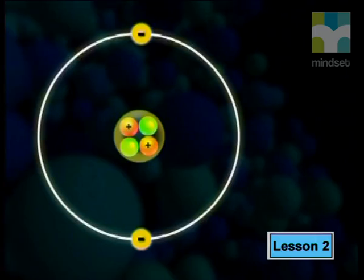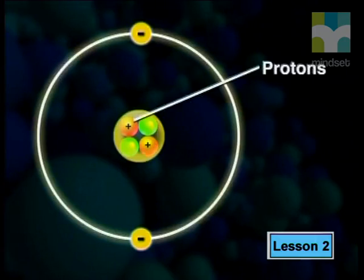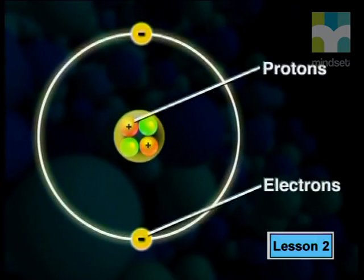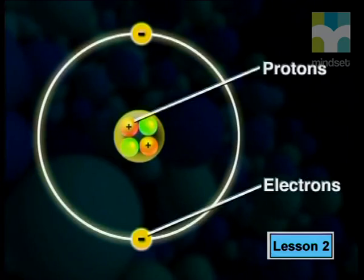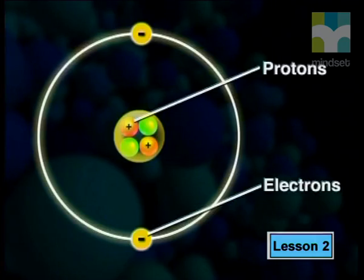Let's begin this lesson by having a look at the model of an atom. Within the nucleus of the atom are positively charged protons. Negatively charged electrons move around the nucleus in different orbitals. An electron and a proton have the same size of charge — an electron has a charge of minus one while a proton has a charge of plus one. For every positive proton there is a corresponding negative electron, so each atom has no overall charge — it is neutral.